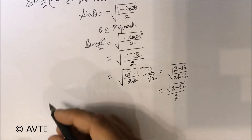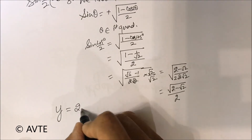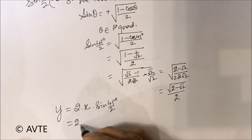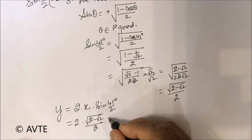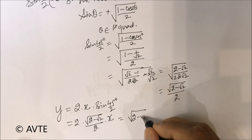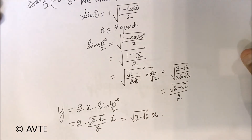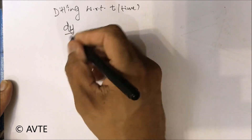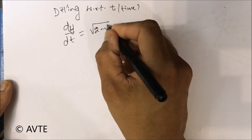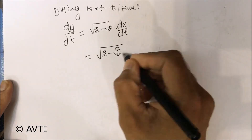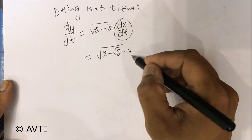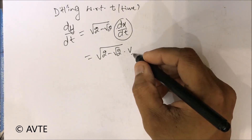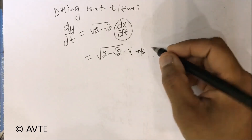Coming back to the equation Y = 2X · sin(45/2°) and substituting the value, then differentiating with respect to time, we get dy/dt. Since dx/dt = V, we get that they are being separated at a rate of √(2 − √2) · V meters per second.